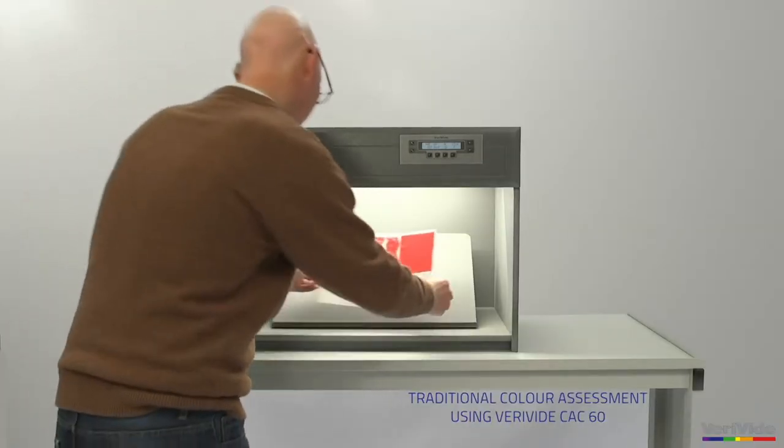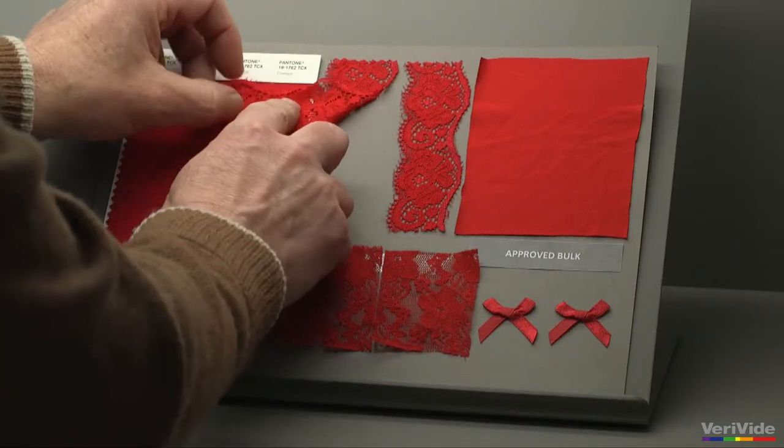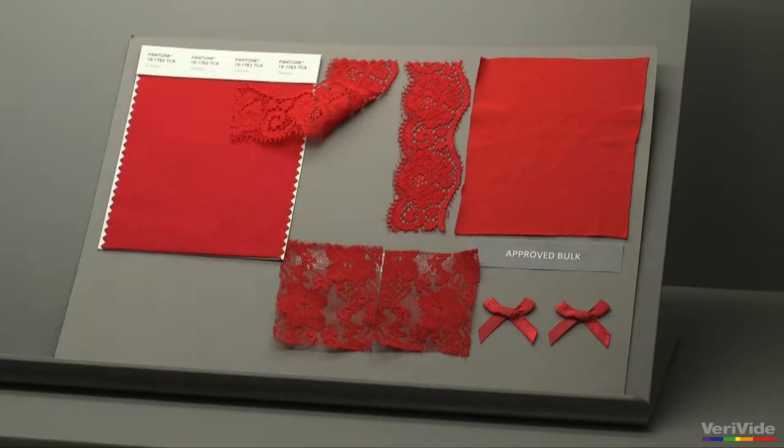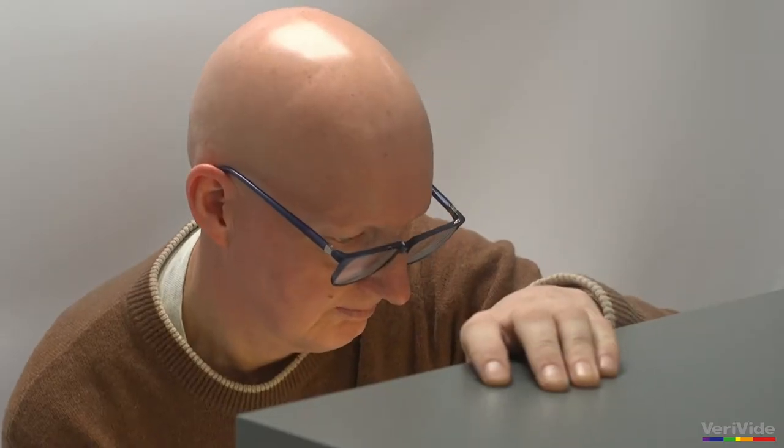Traditional colour approval uses physical samples which are viewed and assessed in a light cabinet. Batches, or in this case garment components, are assessed against the colour standards under different lighting.